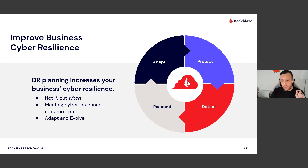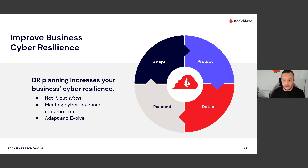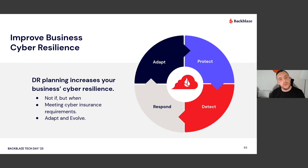A key point I hope everyone takes from this presentation: a DR plan is not a static thing. It is a circle — a flywheel, not a checkbox. It needs to be something you are continuously iterating on and thinking about. You should have some kind of cadence where you go through and evaluate what you're going to do if things go under. DR planning does increase your business's cyber resilience — and as I said, it's not if, but when.